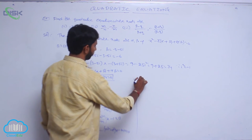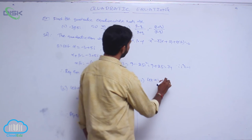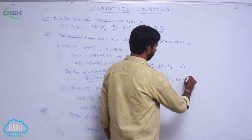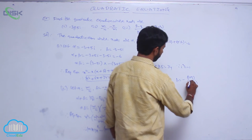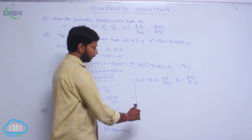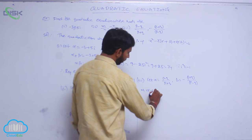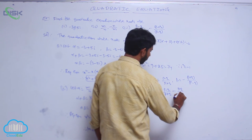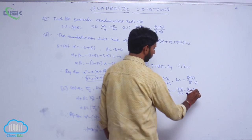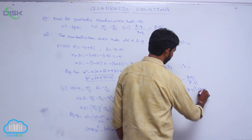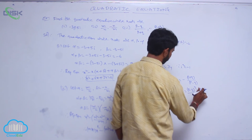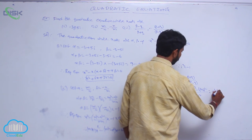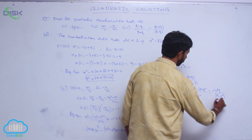For the third one, let alpha = (p minus q)/(p plus q) and beta = minus (p plus q)/(p minus q). Finding the sum of roots: alpha plus beta = (p minus q)/(p plus q) minus (p plus q)/(p minus q) = [(p minus q) squared minus (p plus q) squared] / (p squared minus q squared).